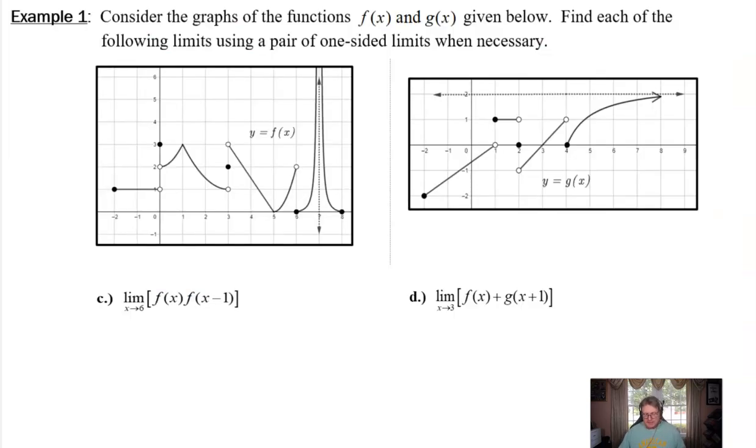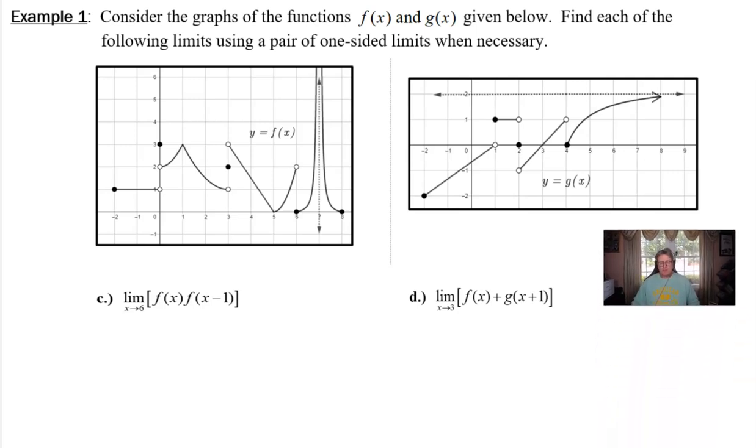Once again we see we've got the graph of f and g and we're going to find each of the following limits using a pair of one-sided limits. Now in problem c, finding the limit as x approaches six of f of x times f of x minus one, we're not going to be using graph g at all.